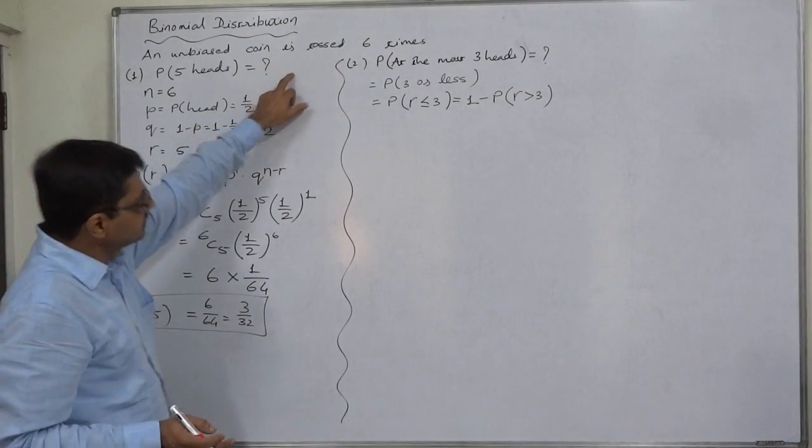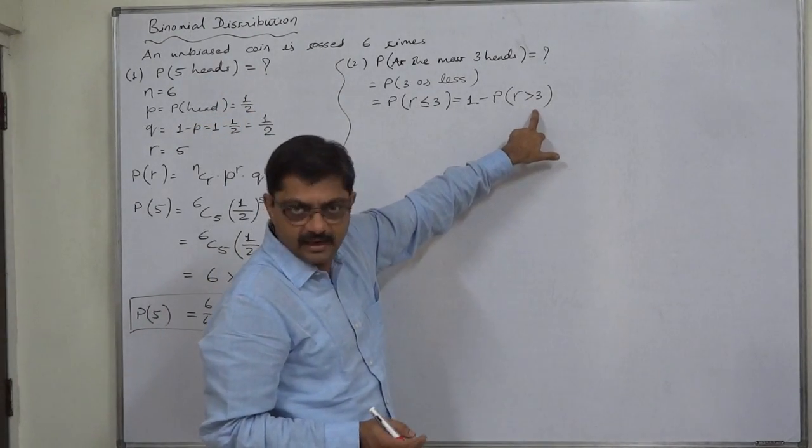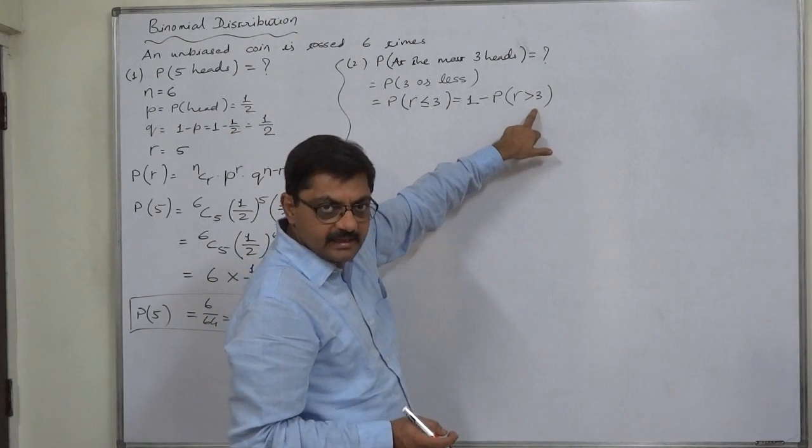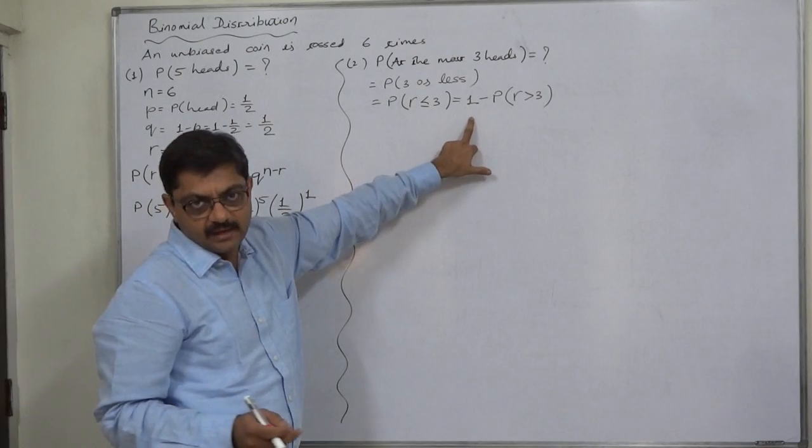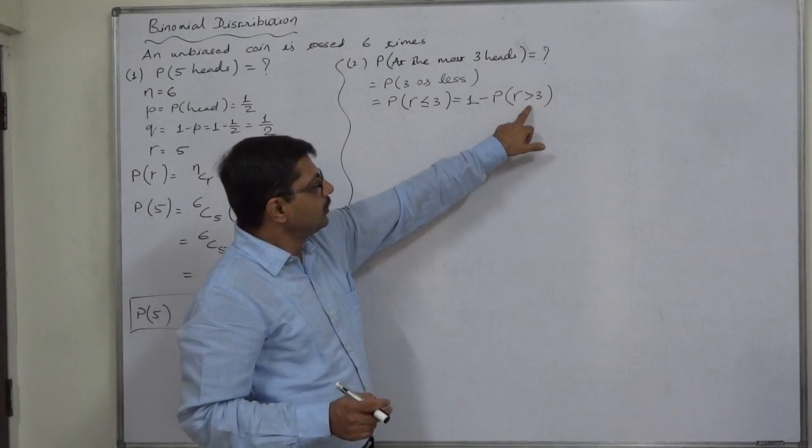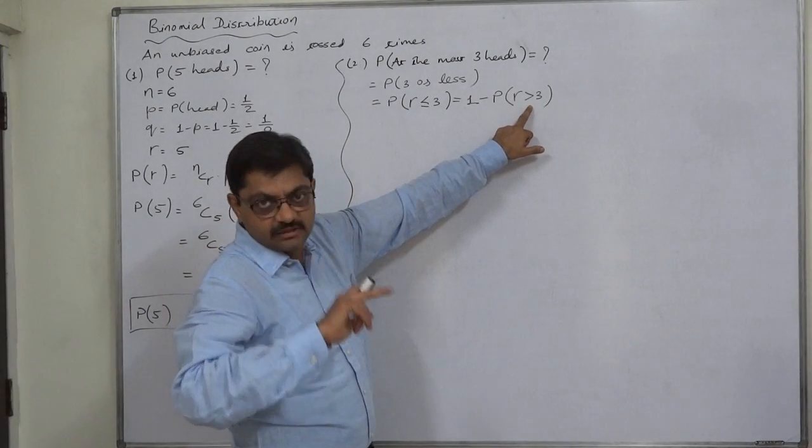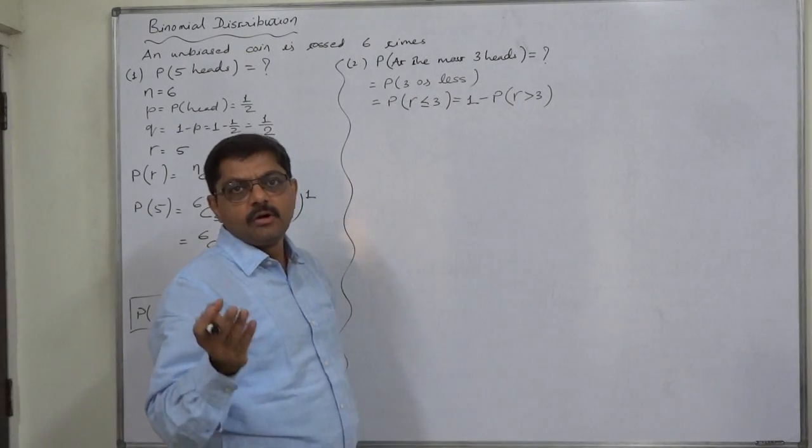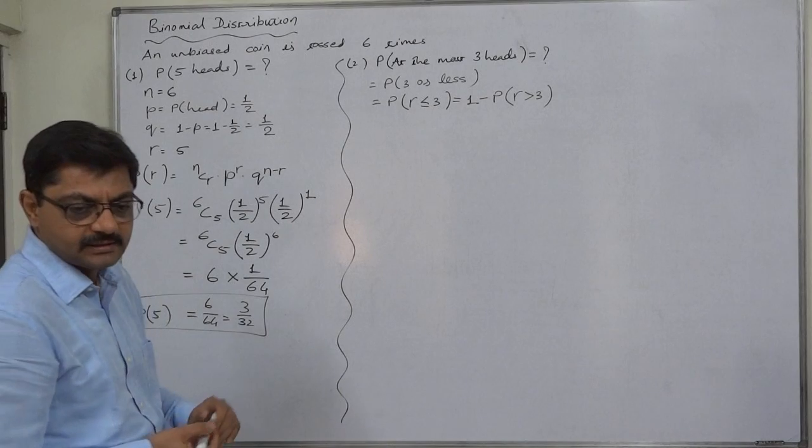In this case, with n equals six, we have to calculate probability of four, five, six—they are greater than three. And the summation should be subtracted from one. The same final answer will be there. We have already calculated probability of five, so we are going to get the answer through this way, because we only need to calculate probability of four and probability of six heads respectively.